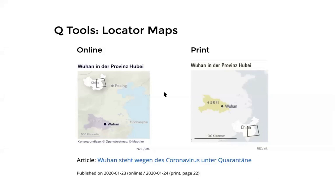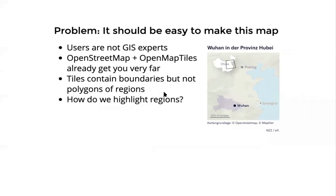So why did I explain this to you? I want to tell you more about how such maps are made in Qtools and specifically one aspect of it. The problem is that it should be possible for colleagues in the newsroom to make maps like this without requiring weeks of training to become GIS experts. We would like a tool where they can create maps like these with a few simple clicks.